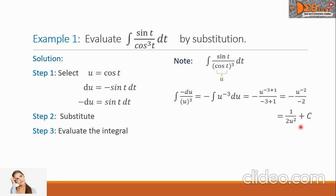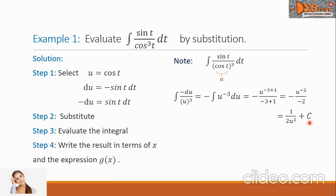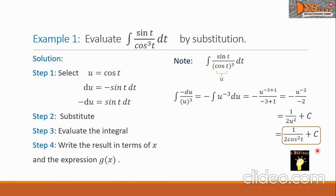Then we write plus c. Step 4: return the value of u. Substituting u equals cosine t, the final answer is 1 over 2 cosine squared of t, plus c.